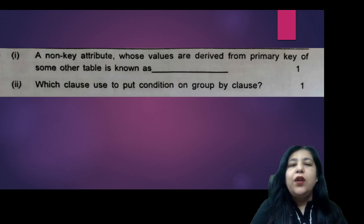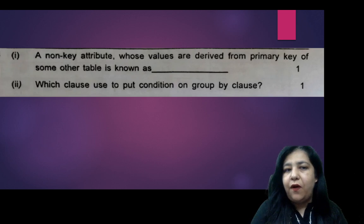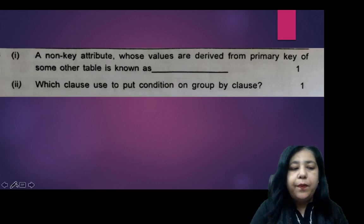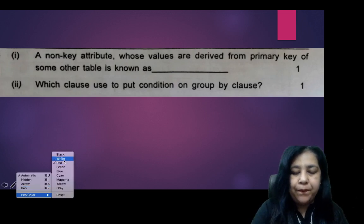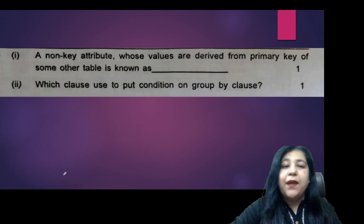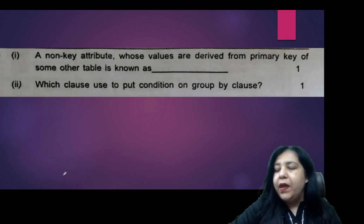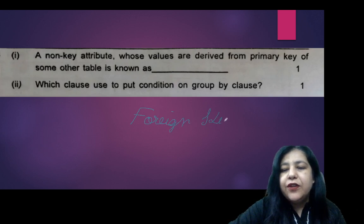We have a question: a non-key attribute whose values are derived from primary key of some other table is known as dash. Okay, so it is not a primary key, but it is taking values from the primary key of another table. So what do you call it? Foreign key.